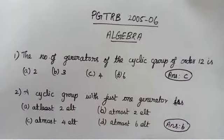And second question, a cyclic group with just one generator has how many elements? This is a repeated question. At most 2 elements. So the answer is option B.